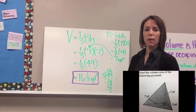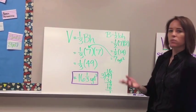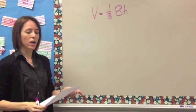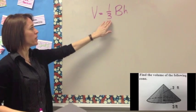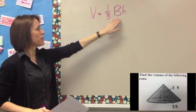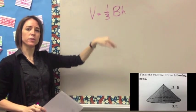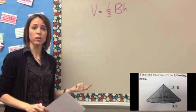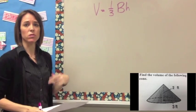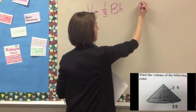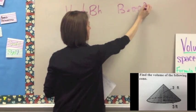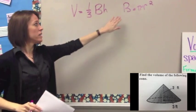Don't forget to use cubic units because we're talking about volume. Now let's move on to example 3 — this time we're talking about a cone. The formula is the same: (1/3) times the area of the base times the height. The difference from the previous examples is that our base is now a circle, so we need to use a different formula for the area of the base: π r squared.